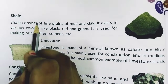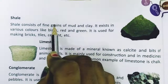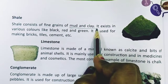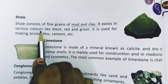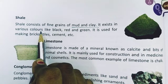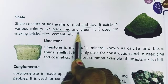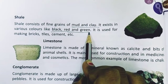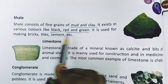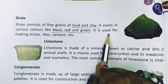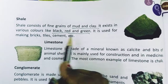Shale consists of fine grains of mud and clay. It exists in various colors — you can find different colors like black, red, and green. It is used for making bricks, tiles, and cement.